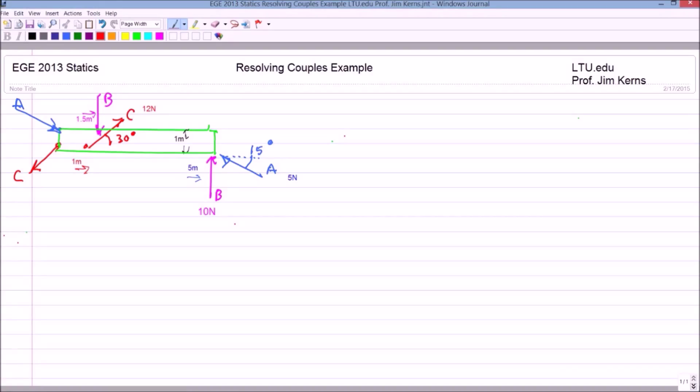Okay, first of all, I want to take just a moment to show how a couple is a free vector that seems to confuse students. So we'll look at that carefully. And what that means is we can move a couple around and basically apply it anywhere once we found it.